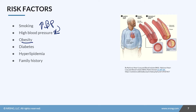Diabetes causes inflammation and slowing of blood through the vessels. Hyperlipidemia refers to the buildup of fat, which leads to plaque buildup in the vessels. And those with a family history of coronary artery disease are also likely to develop it.